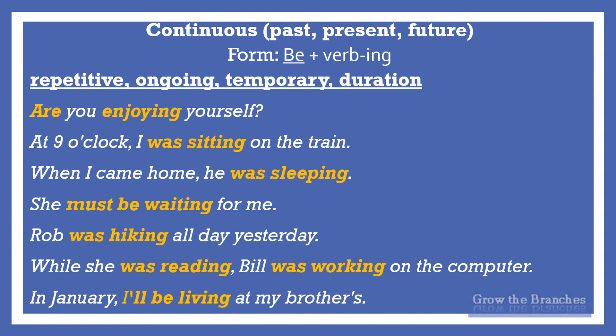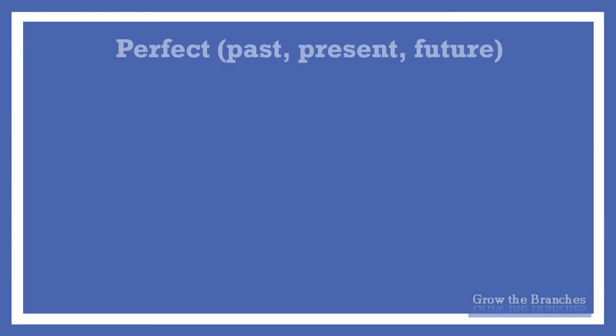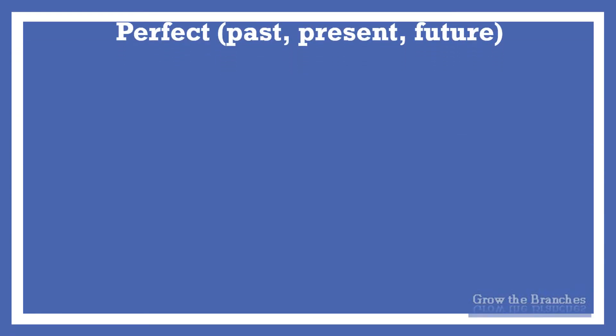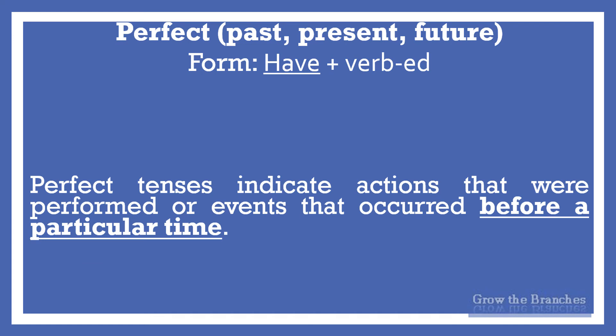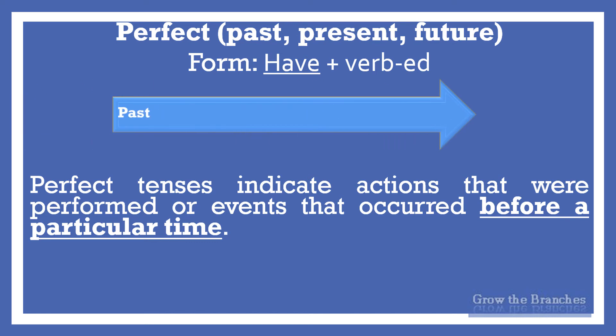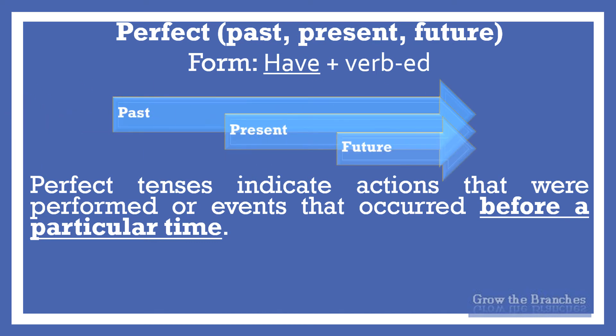As you have seen, the continuous aspect is used to express that an action is still progressing and incomplete at some point in time. The perfect tense form is: have (in the past, present, or future) plus the past participle — verb plus 'ed'. The perfect aspect expresses completion. Perfect tenses indicate actions that were performed or events that occurred before a particular time. The perfect aspect relates two times: from past to pre-past, present to pre-present, future to post-future. In other words, they start at one time but end in another.